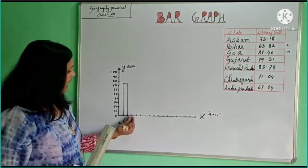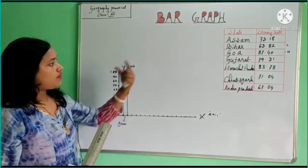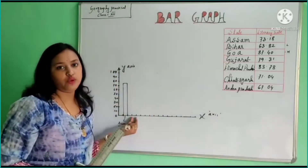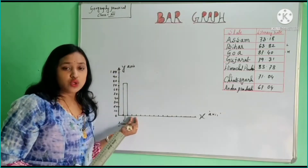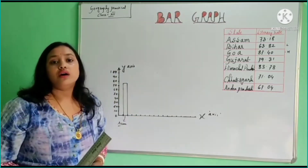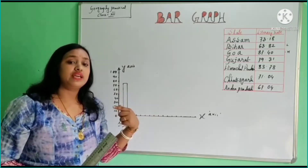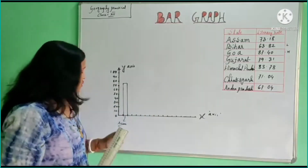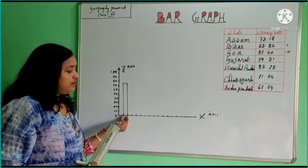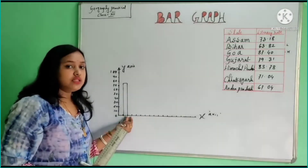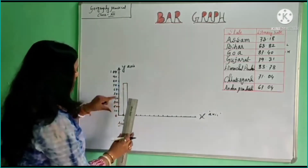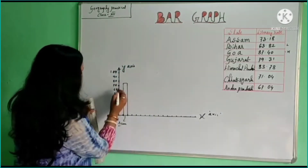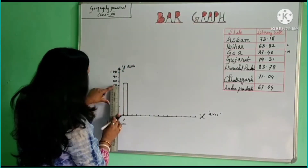Now we take a gap between two bars — the gap is also one centimeter. Our second state is Bihar, and we maintain the same width for Bihar. This represents uniform width and uniform gap. After the one centimeter gap, we draw our next state Bihar. Bihar's value is 63.82, so 60 is here, then 63.